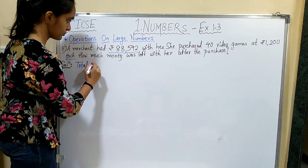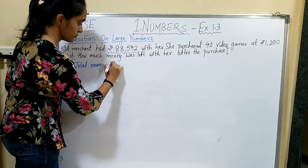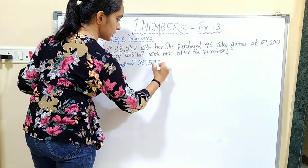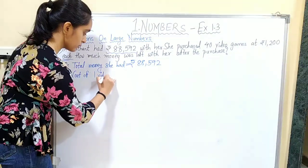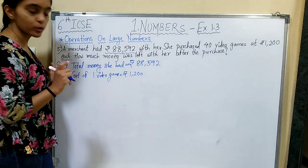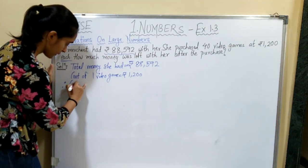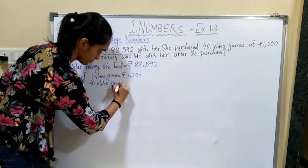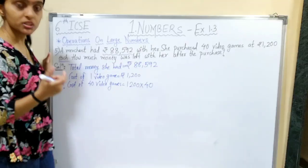Total money she had equals Rs. 88,592. The cost of 1 video game is Rs. 1,200. Multiplying Rs. 1,200 by 40 will give the cost of 40 video games. So 12 fours are 48, giving Rs. 48,000 as the cost of all 40 video games.